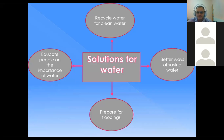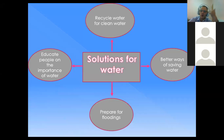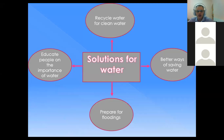There are solutions for water. We can recycle water through water treatment plants to clean it so we can use it again. We need better ways of saving water. We can prepare for flooding by making people aware when floods can happen, and by digging trenches and troughs where water can flow into, giving us time to protect our things. A key solution is to educate people on the importance of water, because without water, we will never be able to thrive.